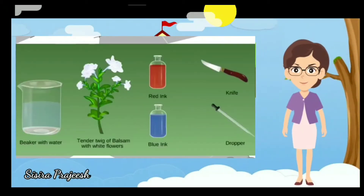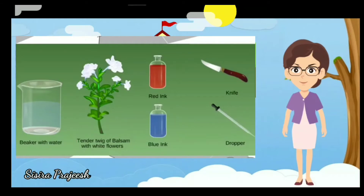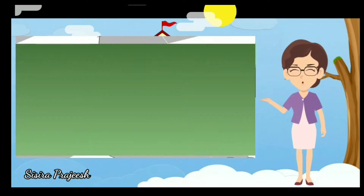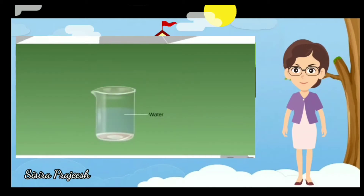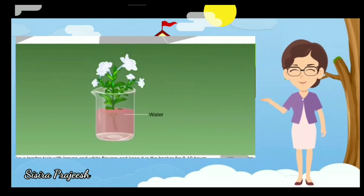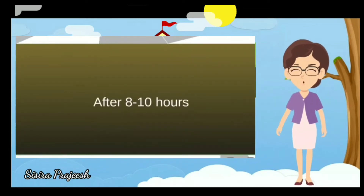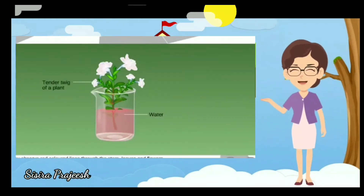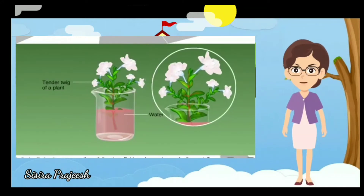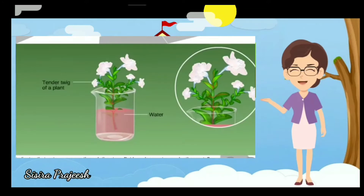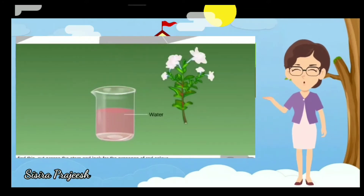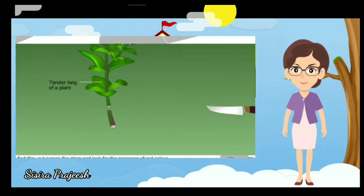Now let us do an activity, children. The materials required are a beaker with some water, a white flower plant, some blue ink, and red ink. Take some water in the beaker, pour a few drops of red ink, and dip the plant inside the water. After 8 to 10 hours, you can find that the color of the stem and the flower may have changed to the color of the ink. Cut the stem and you could find the color change.